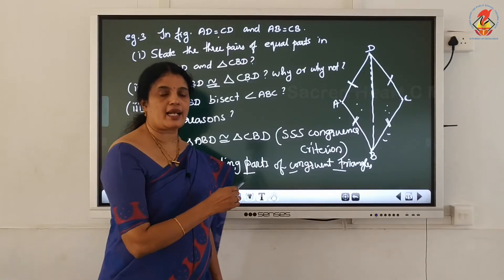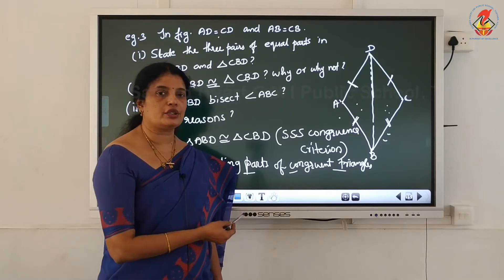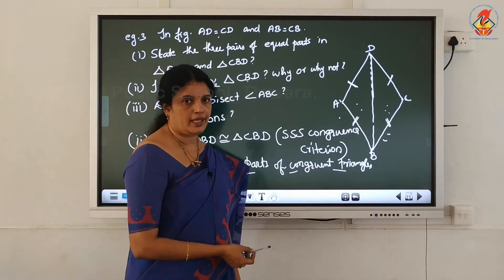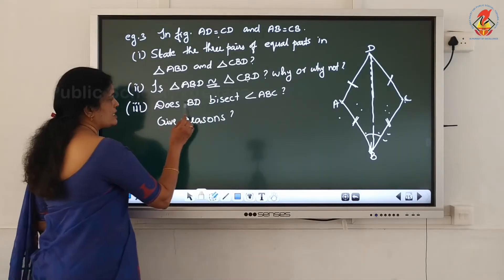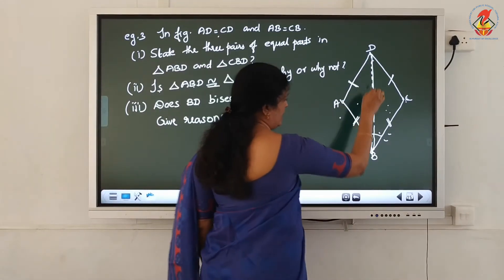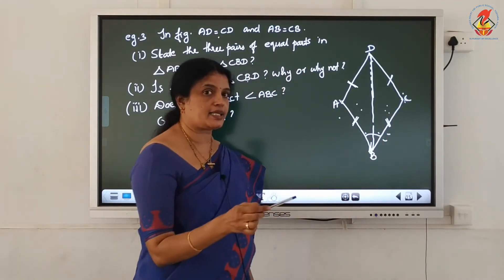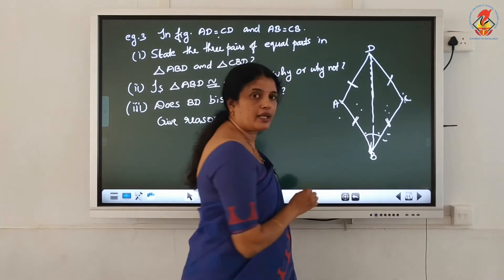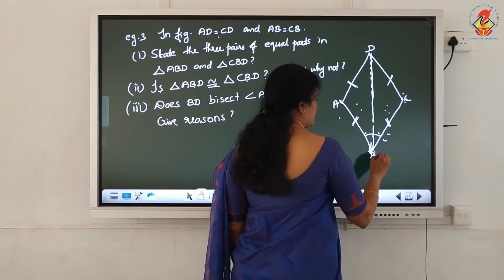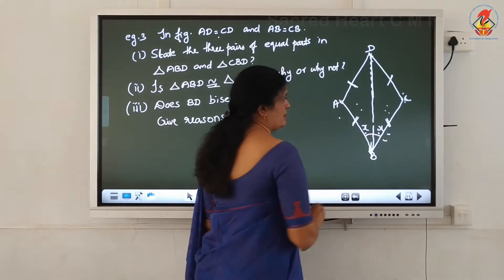If 2 triangles are congruent, then corresponding parts are also equal - meaning corresponding angles are also equal. Third question: does BD bisect angle ABC? Give reason. The line segment BD bisects angle ABC means these 2 angles are equal - angle ABD and angle CBD are equal, both marked with X. How can you check it? These 2 triangles are congruent, then corresponding parts of congruent triangles are equal.